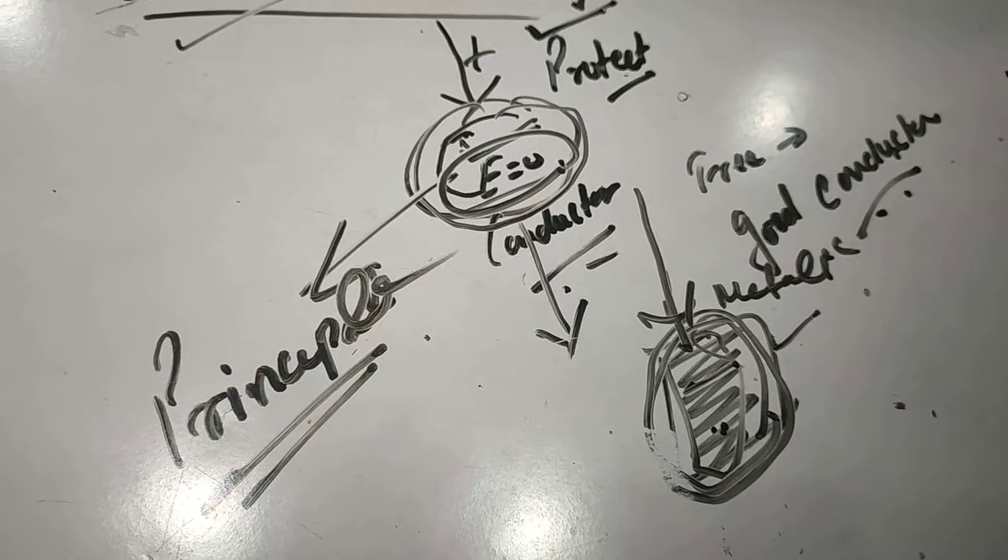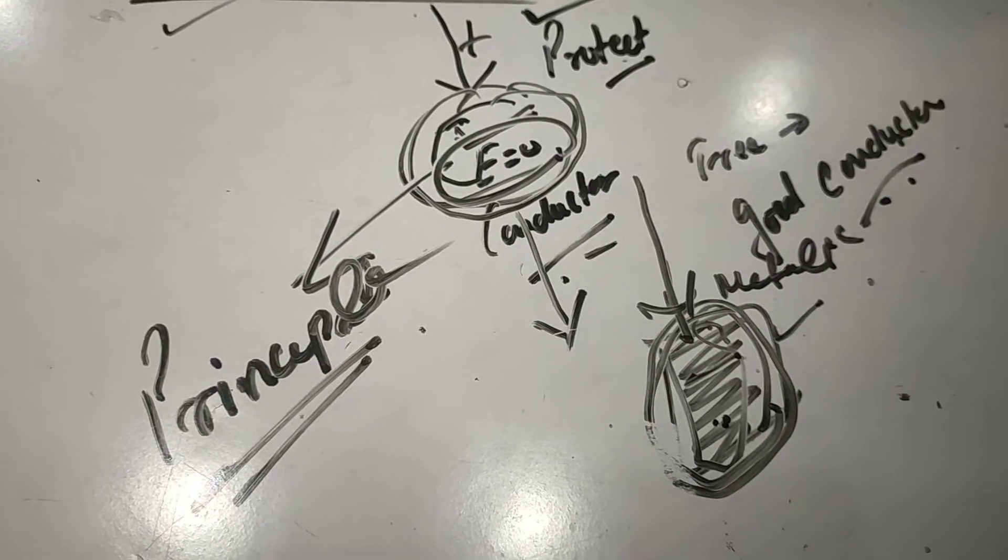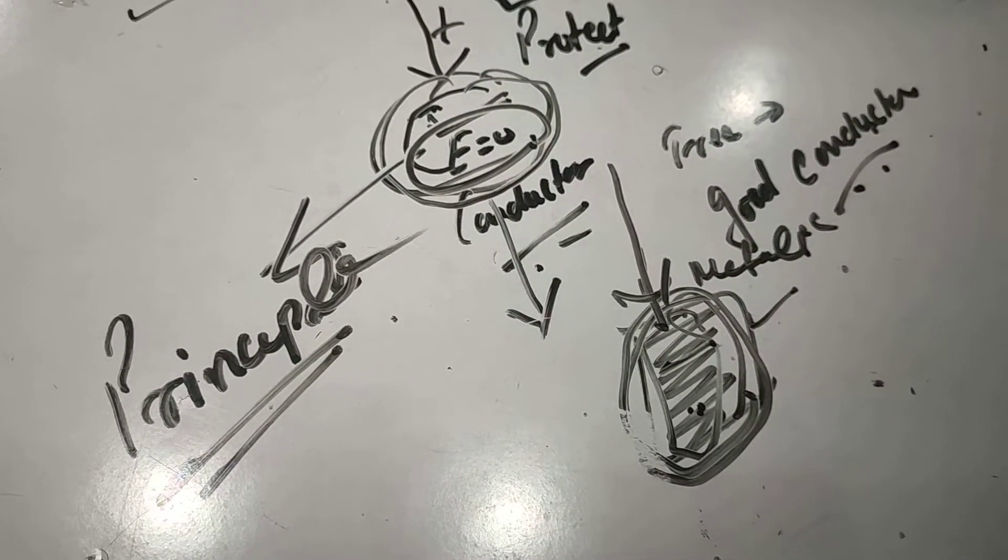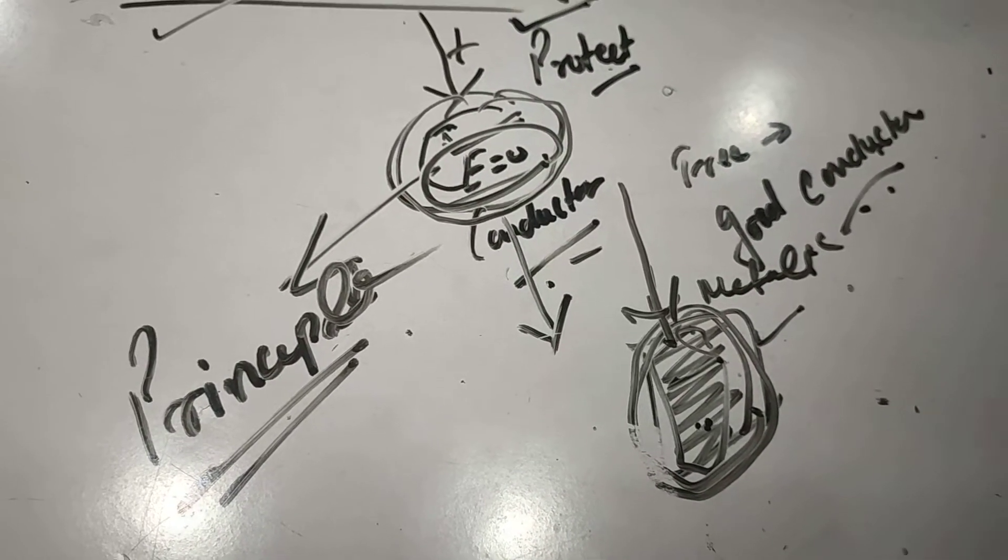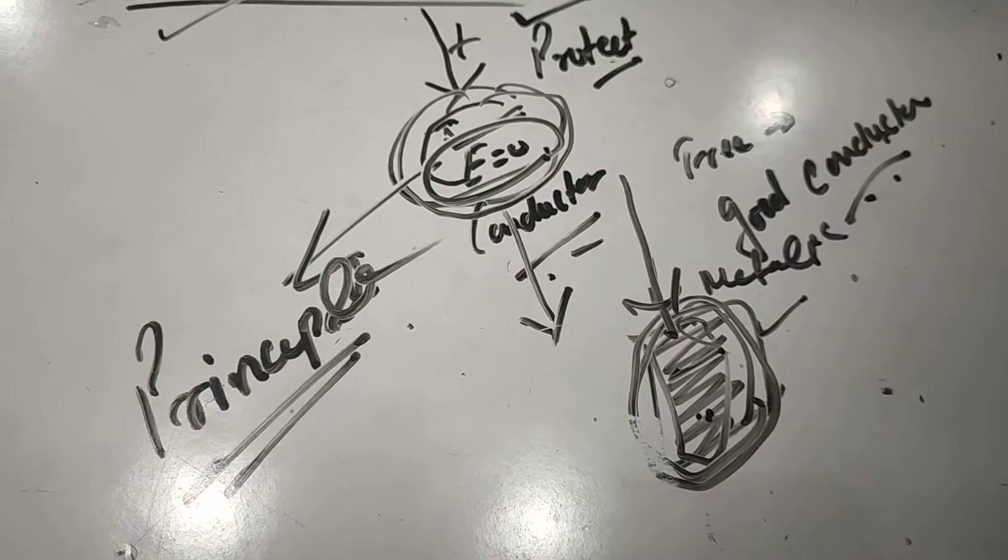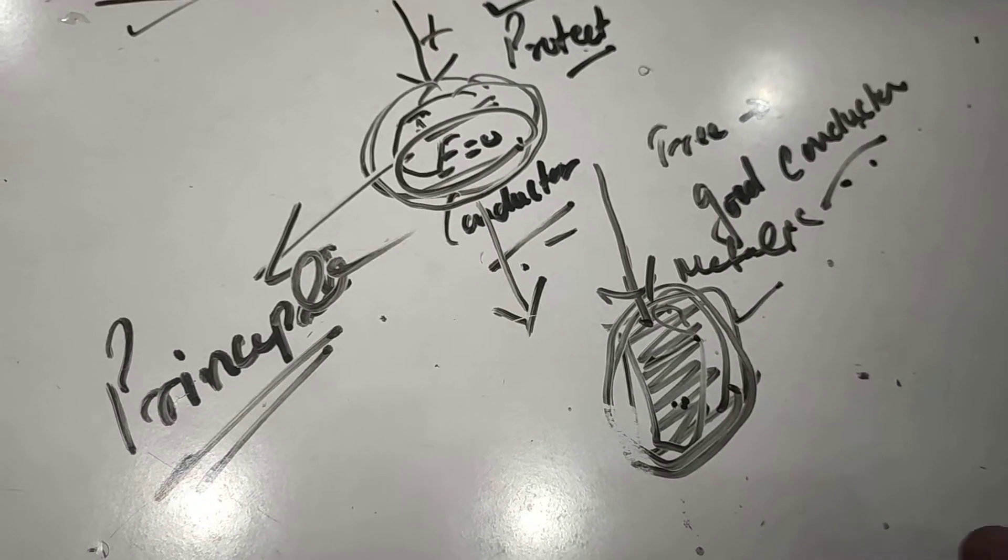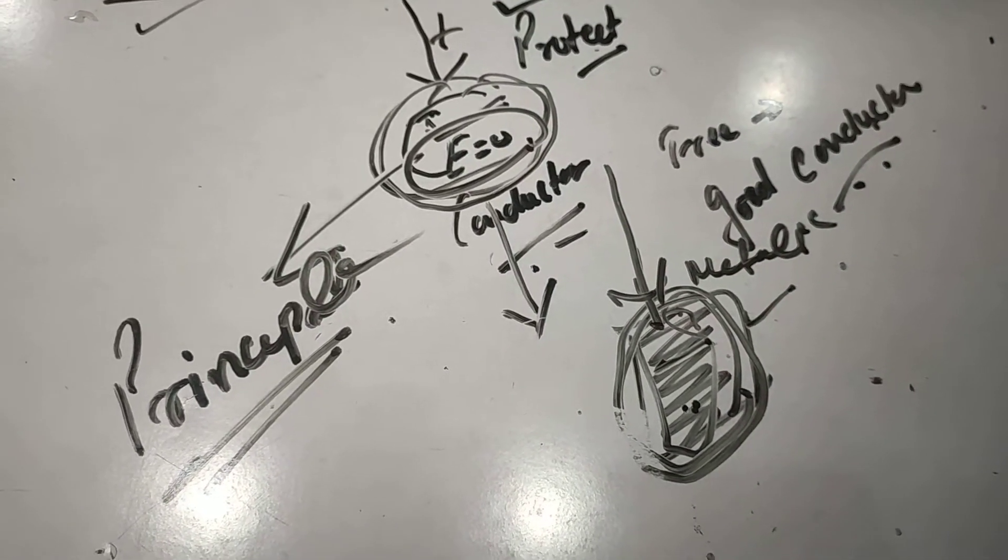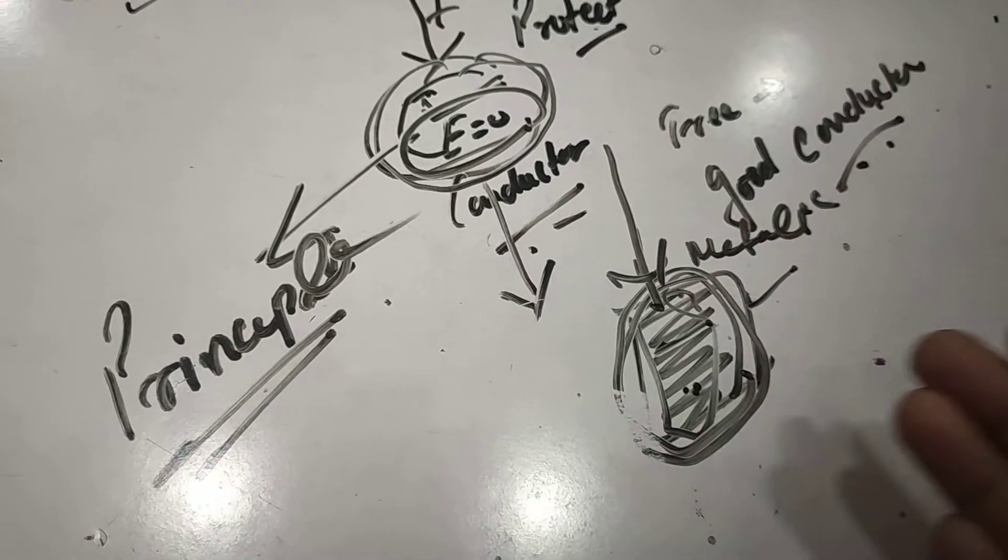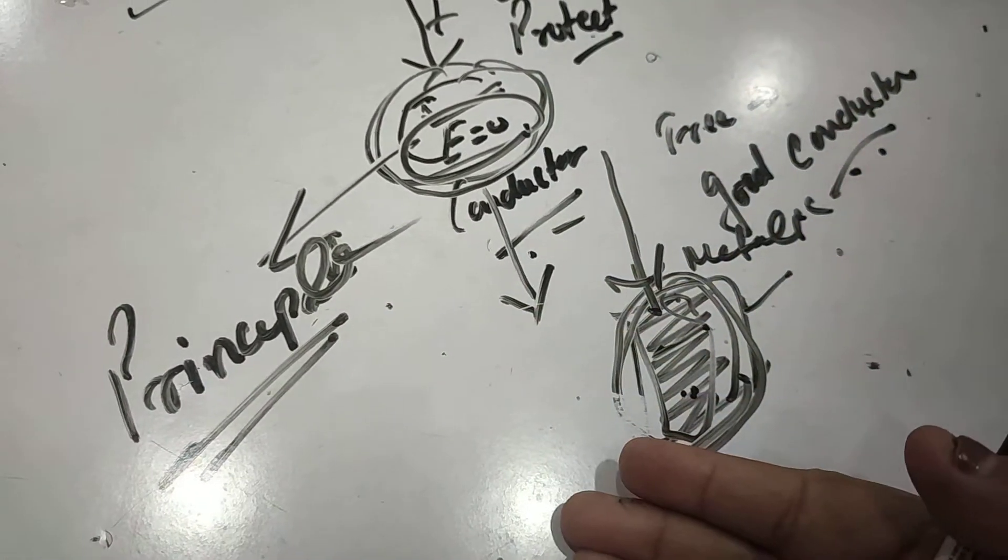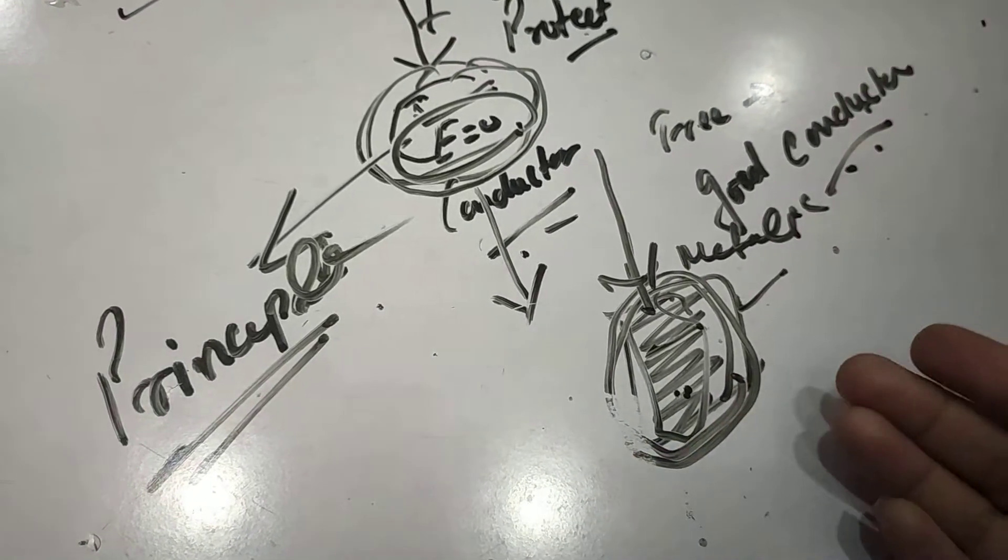This phenomenon is mostly used in protecting generators by keeping them inside a cavity. Because sometimes in case of generators, extra charges develop which can discharge and ionize the air outside. So in such cases, generators are kept inside such cavity so that the charge may not leak out to the atmosphere.